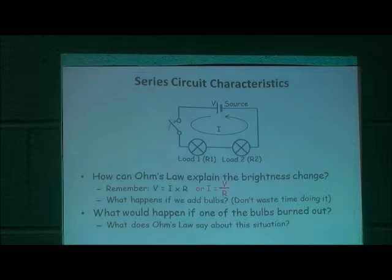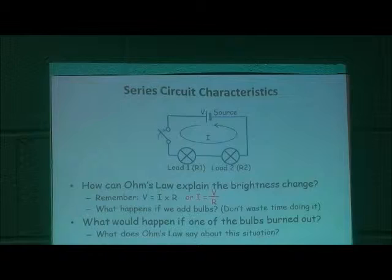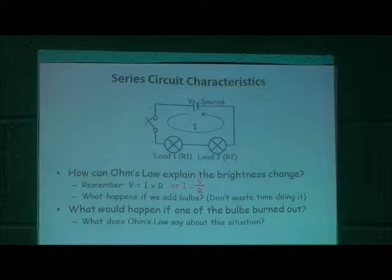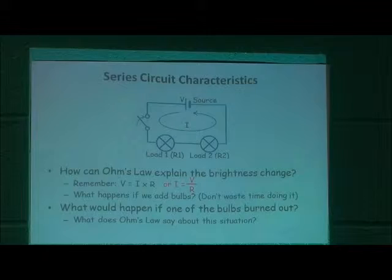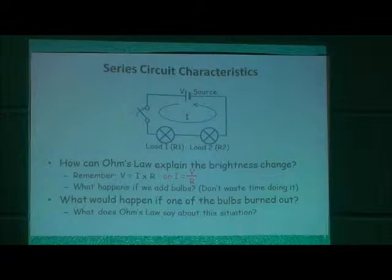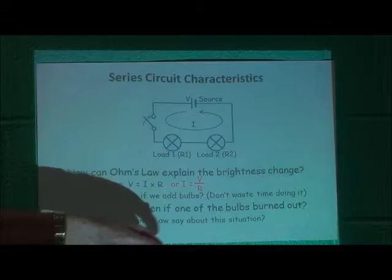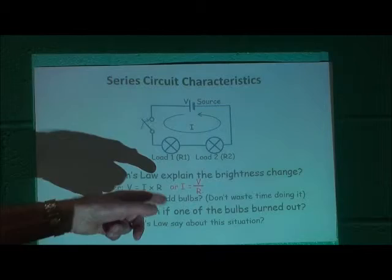What would happen if one of these bulbs burned out? Students speculate first. A bulb works because a piece of wire called a filament gets hot when electricity runs through it, producing light. Over time, the filament disintegrates — creating the equivalent of a broken wire, like an open switch. Ohm's Law tells us the resistance becomes very large, so essentially no current can flow, and none of the lights will light.